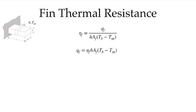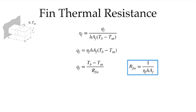So if we can extract the fin efficiency for our particular fin of interest for the conditions we want, we can evaluate the fin heat transfer rate. This looks very much like Newton's law of cooling, and we can convert this into a fin thermal resistance. The fin thermal resistance is defined by saying that the fin heat transfer rate is Tb minus T-infinity over the resistance of the fin. The fin resistance is 1 over hA, as it is for normal convection, multiplied by the fin efficiency.